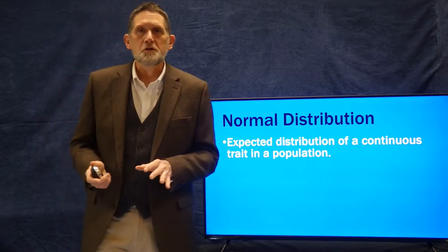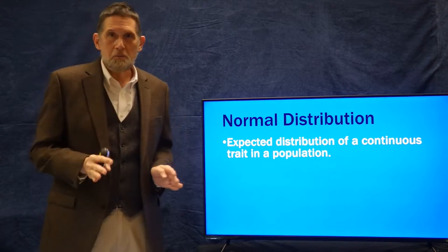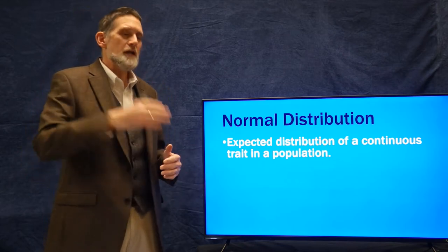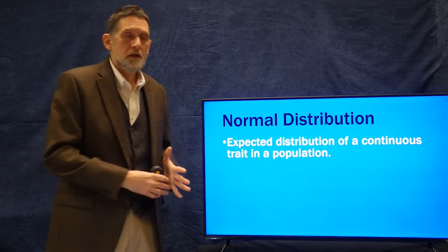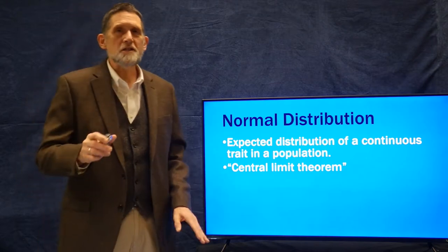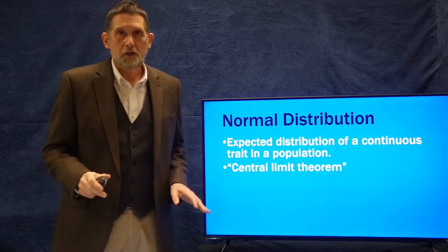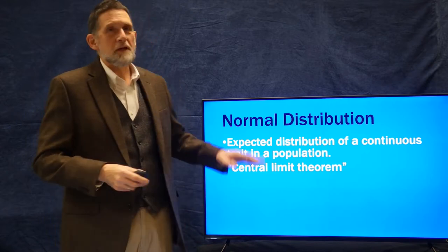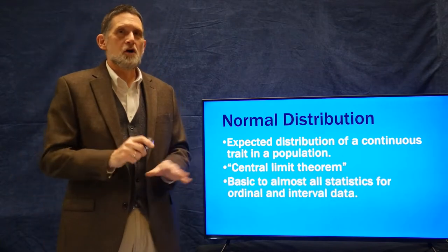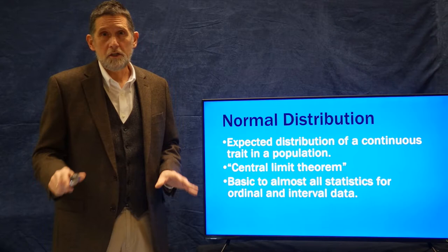The normal distribution is what's expected for any trait in a natural population. The good one for humans is height. We expect there to be a range of heights in a human population, and that is going to form what we call a normal curve. That normal curve is based on — and this is the probability piece — something called the central limit theorem, which we're not going to go into, but it is based on probability theory. It is basic to essentially all statistics for interval and ordinal data that we are going to talk about in this class.